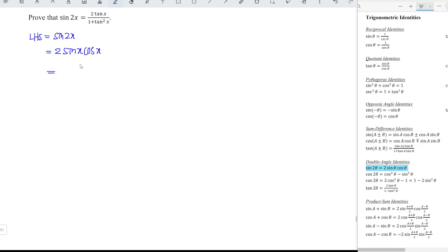And we can rewrite as 2 over 1 over sine x cos x. Apply the Pythagorean identity and we should obtain 2 over sine squared x plus cos squared x divided by sine x cos x.